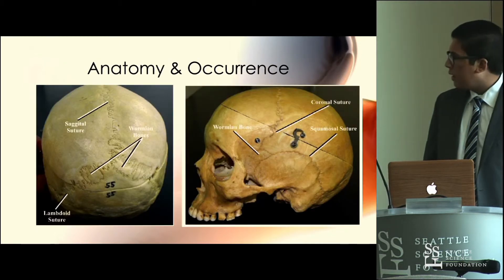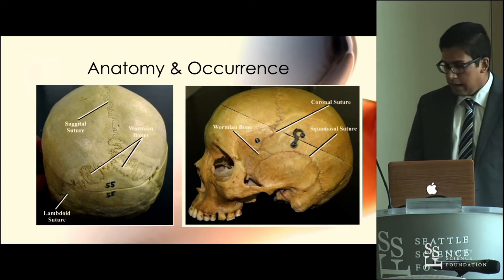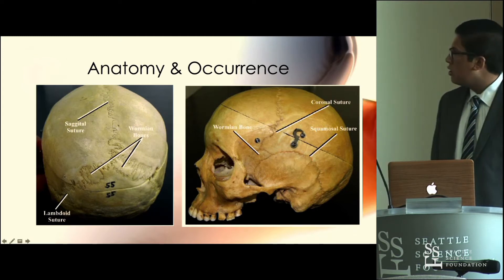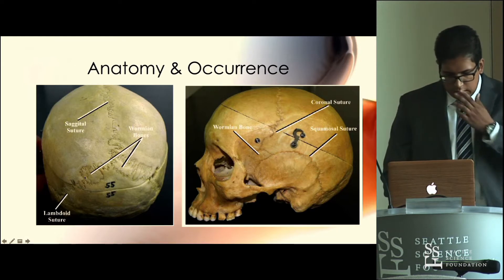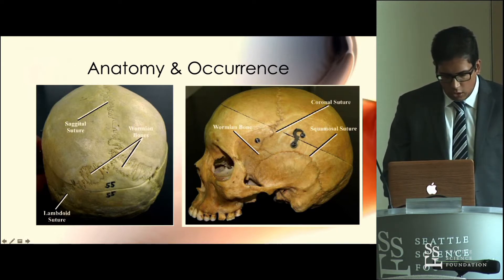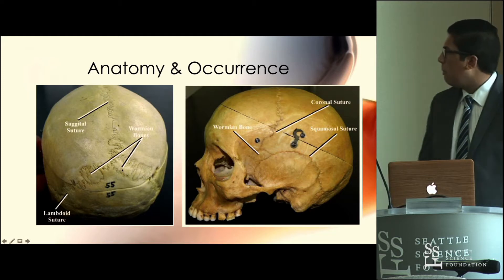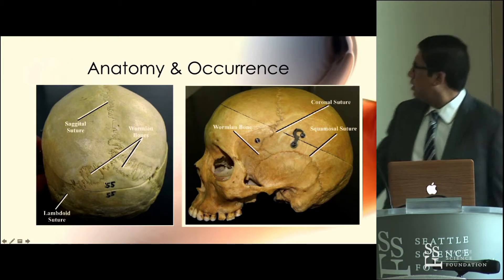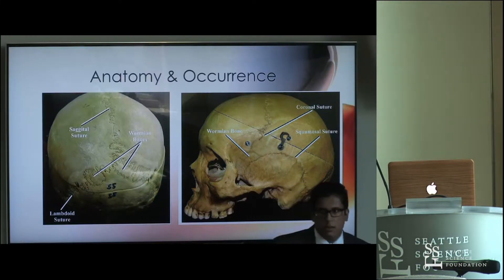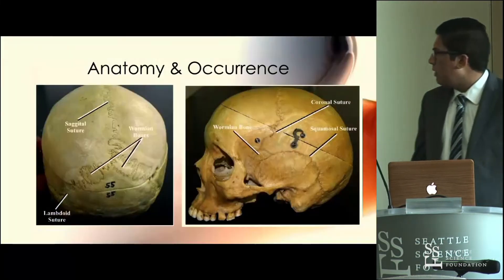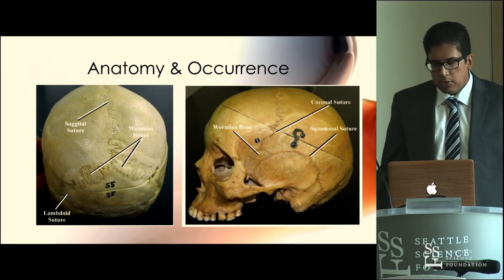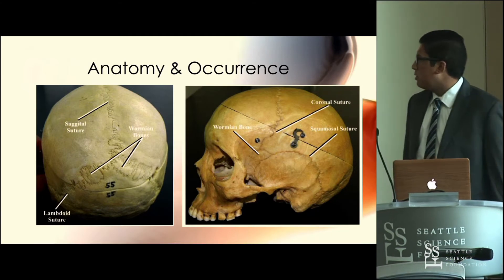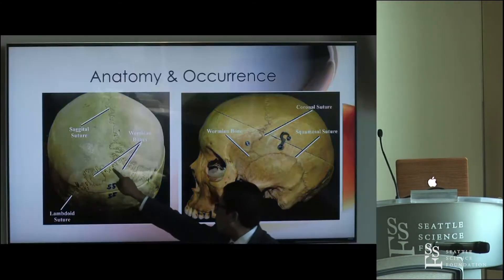Here are two skull samples showing wormian bones. On the left, we see wormian bones along the lambdoid suture on the back of the skull. Following the lambdoid suture across, there are bones here that aren't supposed to be there — these are abnormal bones formed within that suture. They're more commonly occurring within sutures rather than at the fontanelle. The posterior fontanelle would be here, and the wormian bones are occurring within the suture itself.